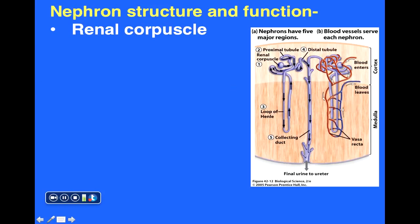The first structure is the renal corpuscle. We see the outer portion of the renal corpuscle referred to as the Bowman's capsule. Notice there's a blood vessel that enters the renal corpuscle and a blood vessel that exits. There's actually a small ball of capillaries referred to as a glomerulus within the renal corpuscle, and this is where blood filtration takes place.